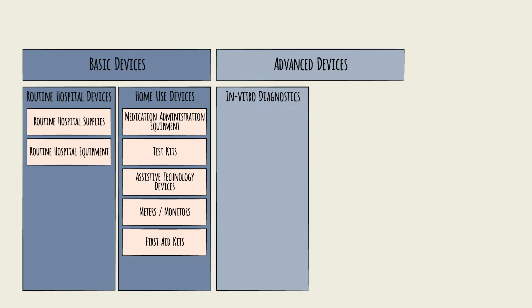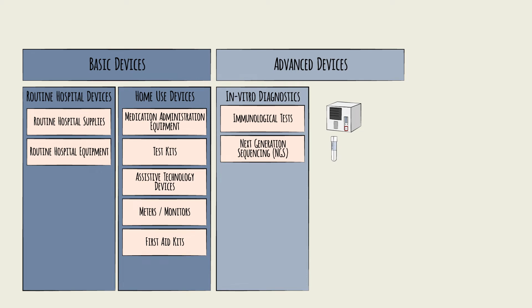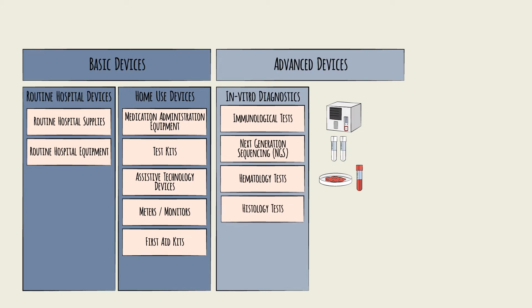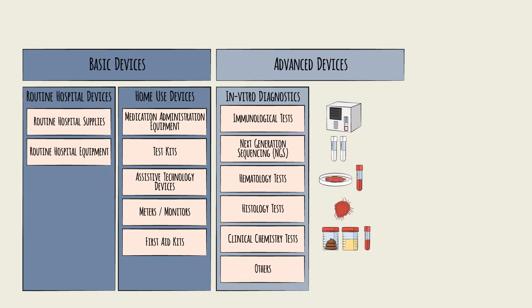The main types of in vitro diagnostics are: devices that conduct immunological tests of blood samples to identify antigens and antibodies; next-generation sequencing (NGS) or molecular diagnostic tests to identify genes or viral infections such as the coronavirus PCR test; hematology tests used to examine blood cells to detect conditions like some cancers or blood diseases like hemophilia; histology tests used to identify malignant tumors or liver damage; and clinical chemistry tests for things like drugs present in the body.